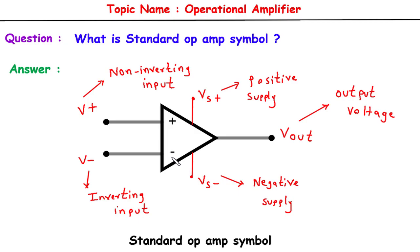The output terminal, Vout, delivers an amplified or processed version of the input signal. The magnitude and polarity of the output voltage depend on the configuration of the input signals and the feedback applied to the inverting and non-inverting terminals.